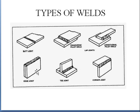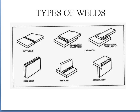An edge joint is where two metals are welded at their edges. A T-joint is where both plates are kept at 90 degrees to each other and welded. A corner joint is where the corners of the plates are welded together. These are the different types of weld joints.